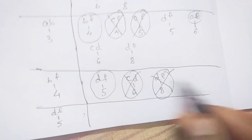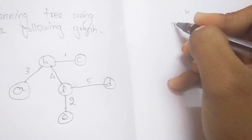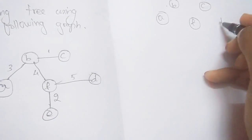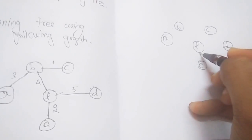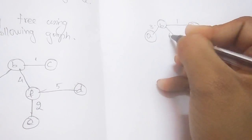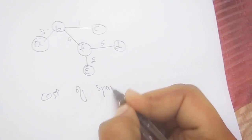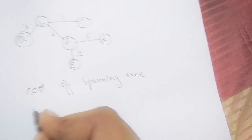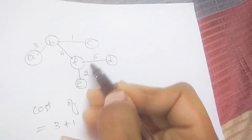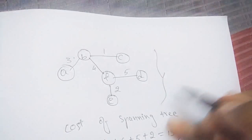The minimum spanning tree includes vertices A, B, C, F, D, E. For the cost of the spanning tree, add all the edge weights: 3 + 1 + 4 + 5 + 2 + 4 + 5 + 2 = 15. So 15 is the cost of the minimum spanning tree.